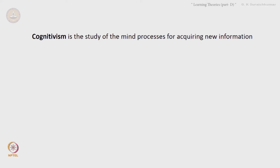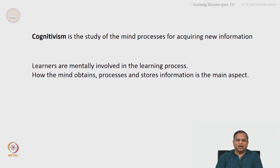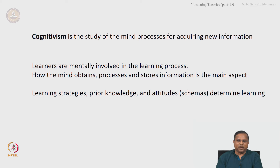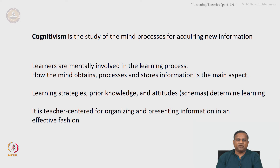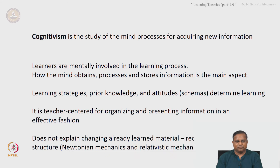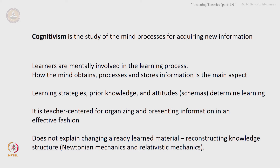Cognitivism comes into the picture as the study of mind processes for acquiring new information. Learners are mentally involved in the learning process — that is the big difference between behaviorism and cognitivism. How the mind obtains, processes, and stores information is the main aspect. Learning strategies, prior knowledge, and attitudes, also called schemas, determine the learning. It is teacher-centered for organizing and presenting information effectively. However, it does not explain changing already-learned material or reconstructing knowledge structures — for example, transitioning from Newtonian mechanics to relativistic mechanics.